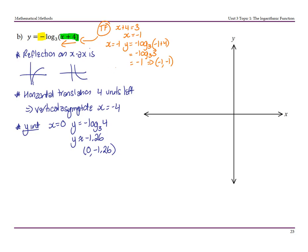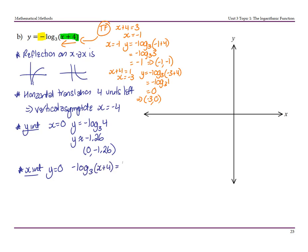Another tech-free option: set x plus 4 equals 1, giving x equals negative 3. Then y equals negative log base 3 of (negative 3 plus 4), which is negative log base 3 of 1, which equals zero. So that gives the point (negative 3, 0). That is the x-intercept. To confirm: set y equals zero, so negative log base 3 of (x plus 4) equals zero, log base 3 of (x plus 4) equals zero, x plus 4 equals 3 to the zero equals 1, so x equals negative 3.